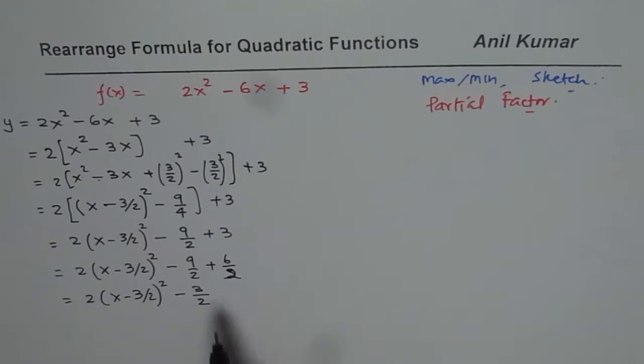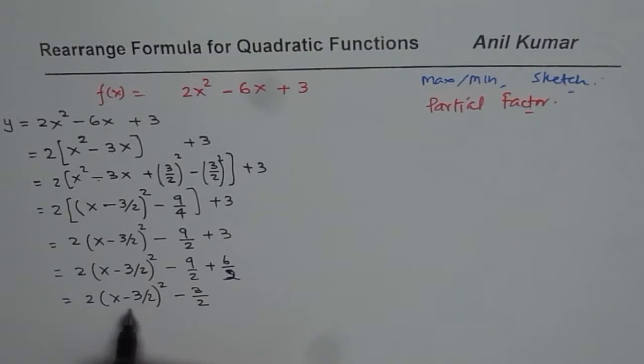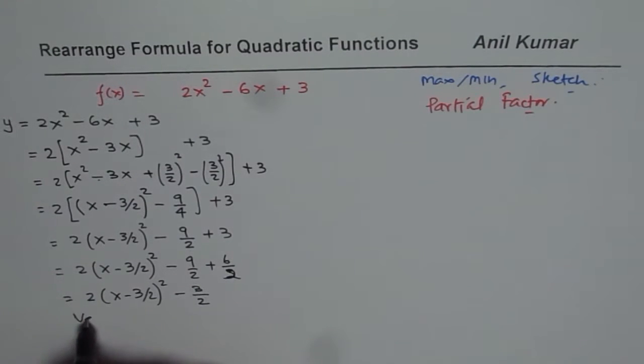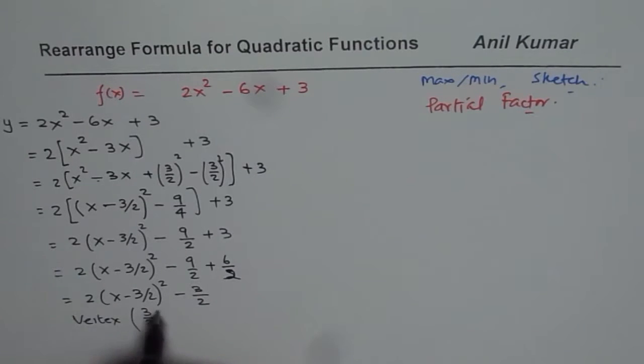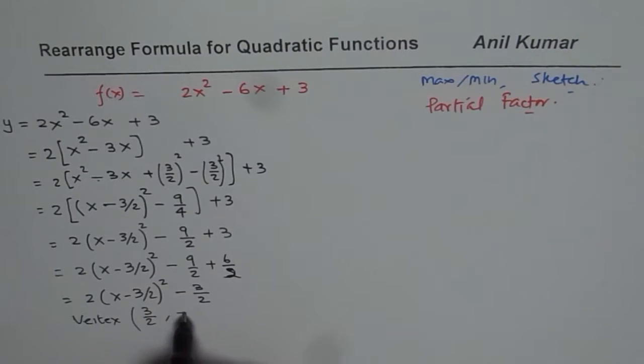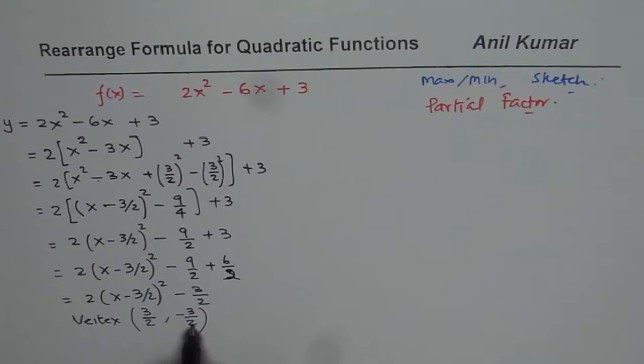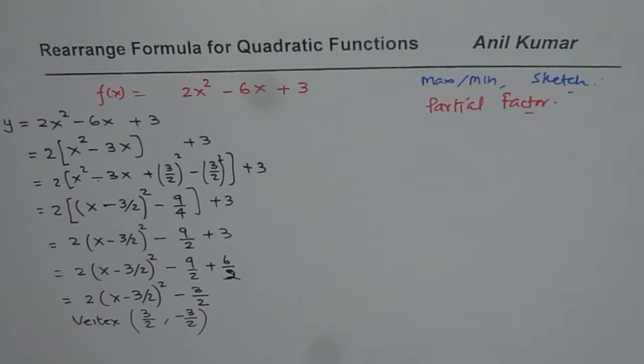So we get the same numbers. Now from here, we can say, what is the vertex? The vertex for this parabola is at 3 over 2. That 3 over 2 for x value makes this part 0. So when this is 0, what do you get? You get minus 3 over 2. So the value is minus 3 over 2 at x equals to 3 over 2.